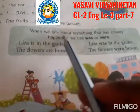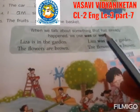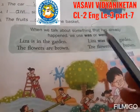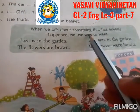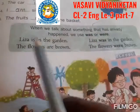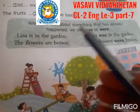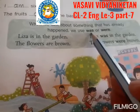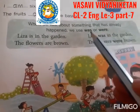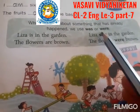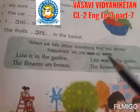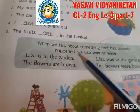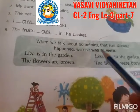See here. When we talk about something that has already happened, we use 'was' or 'were.' When we talk about something that has already happened, we use 'was' or 'were.'